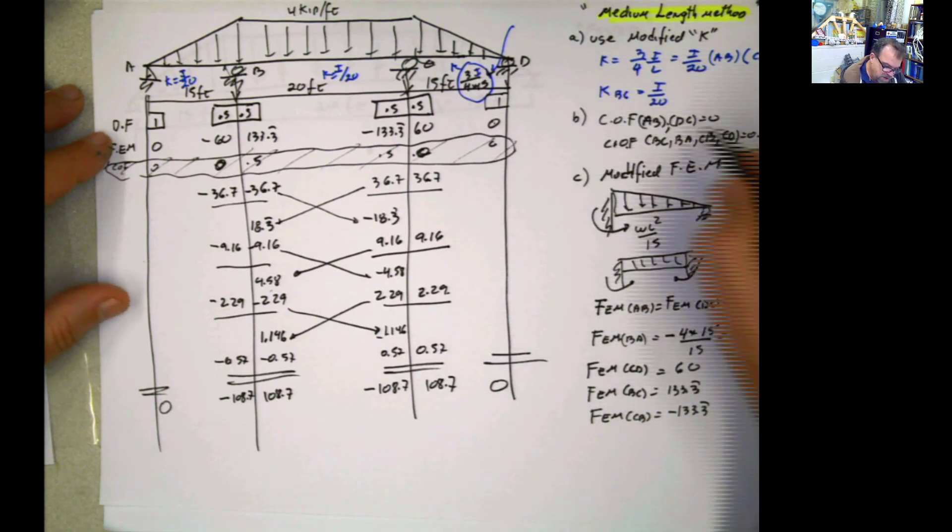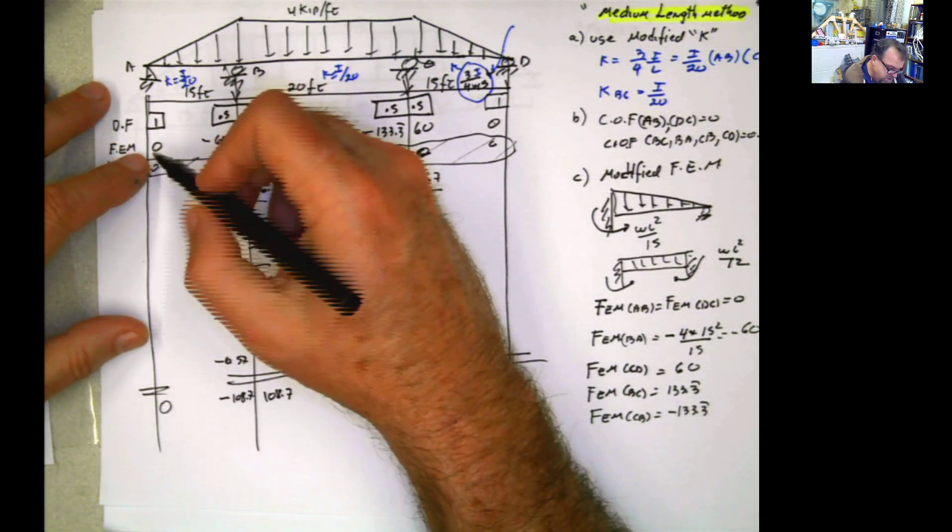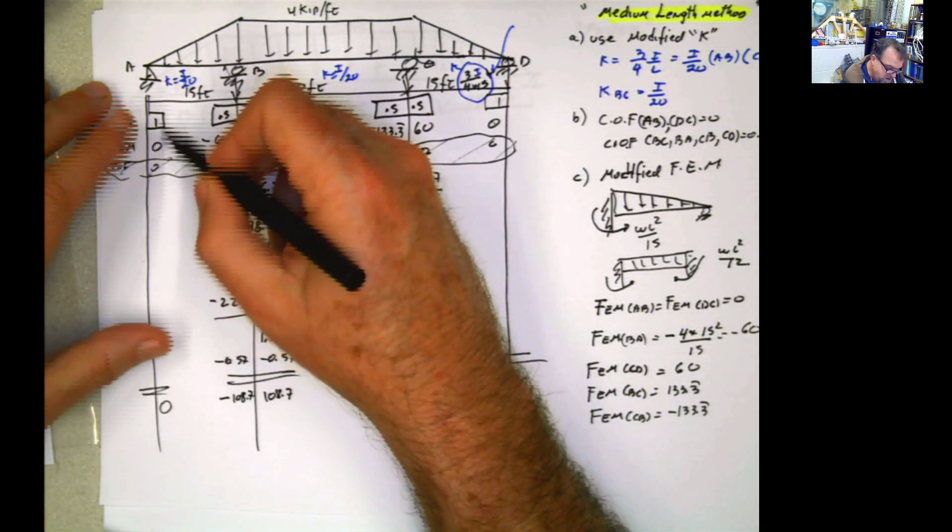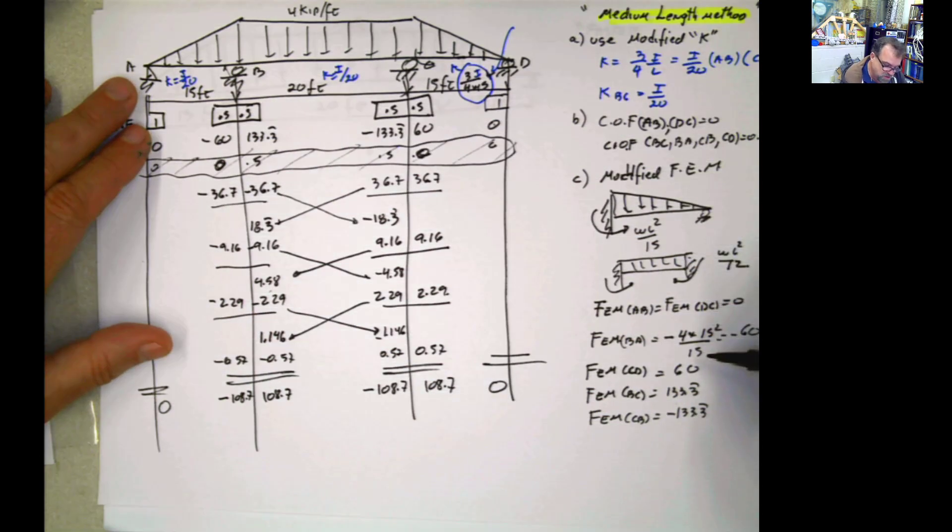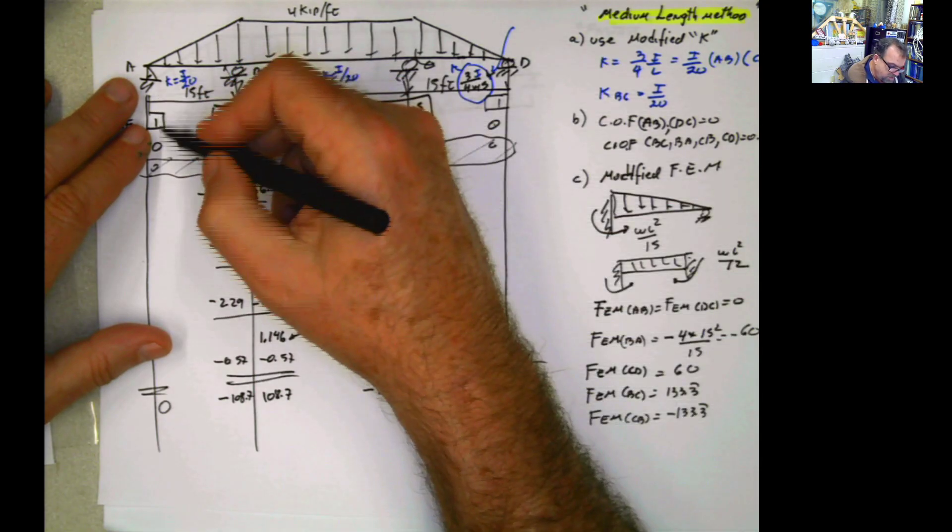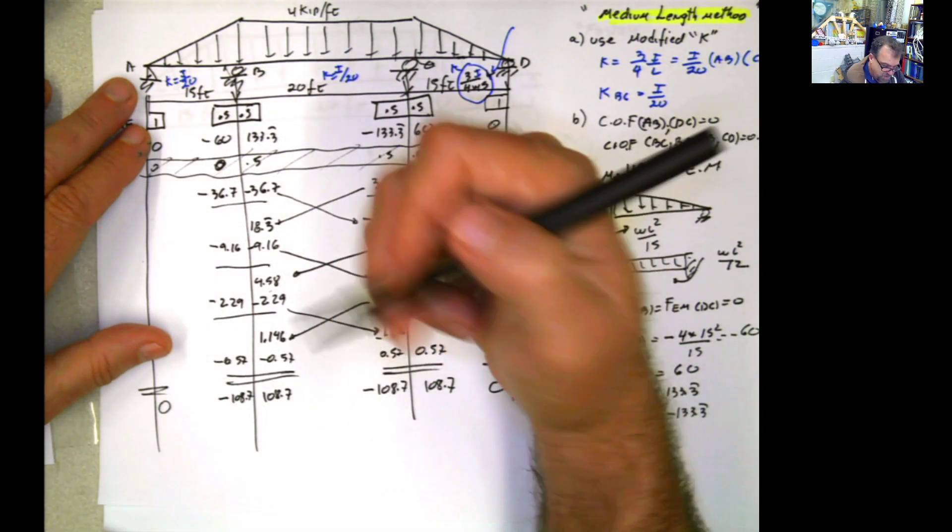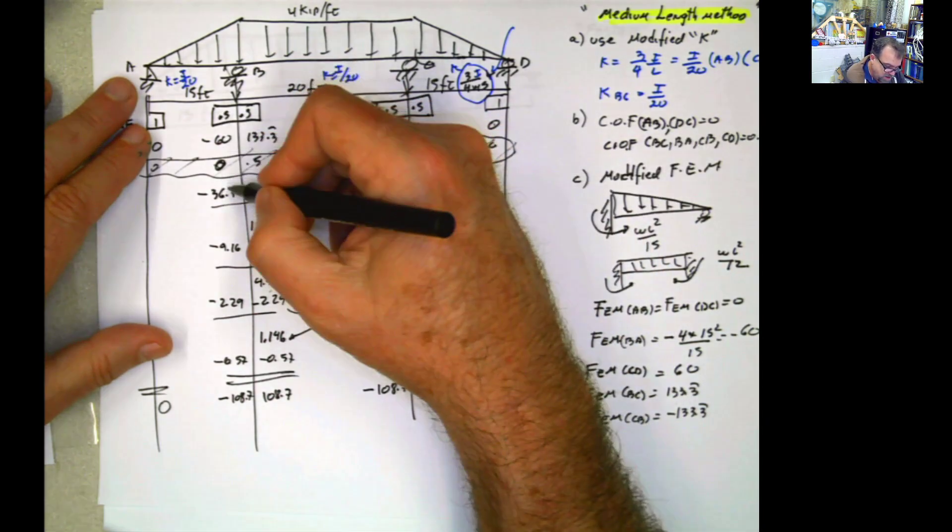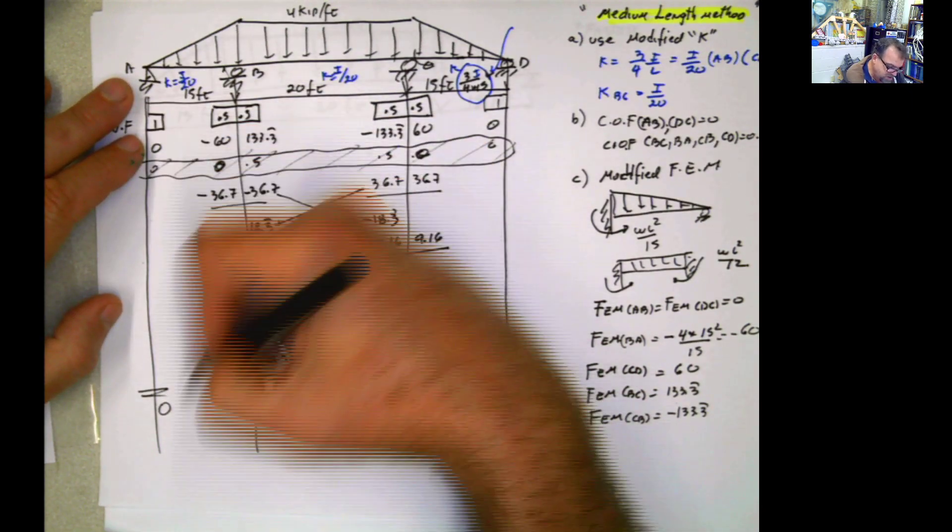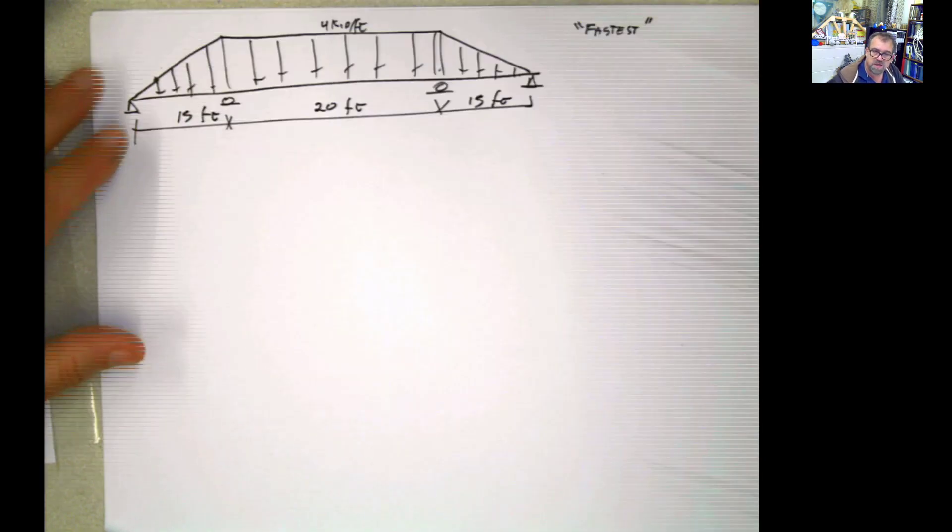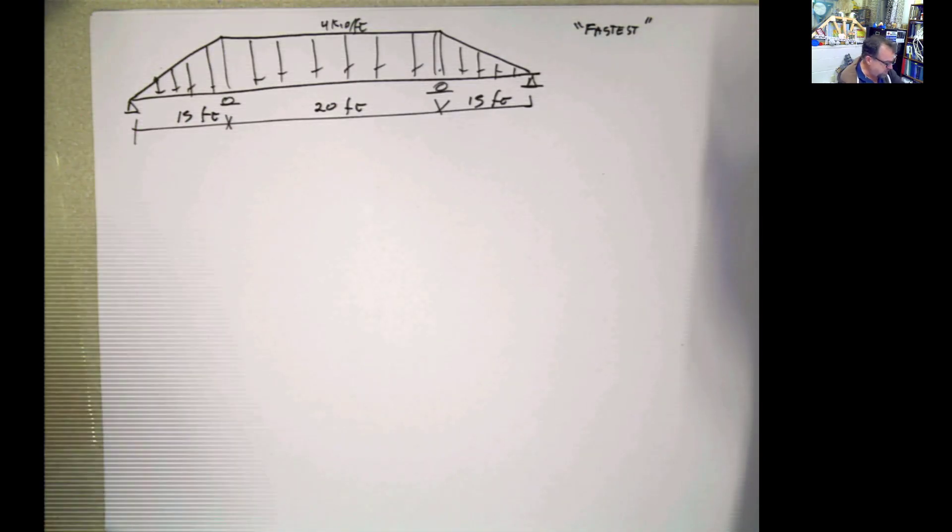OK, it doesn't matter. The carry-on factor here changes because once I'm assuming this far end is zero here and it's a pin, and I'm using the modified fixing moments also, then I have nothing to send or nothing to send back from that support. So once you're here, these values, they already take into account that nothing is going to be sent in that direction. And I got this value. Now I'm going to use the third method, which is the fastest method, because we are taking advantage of everything.